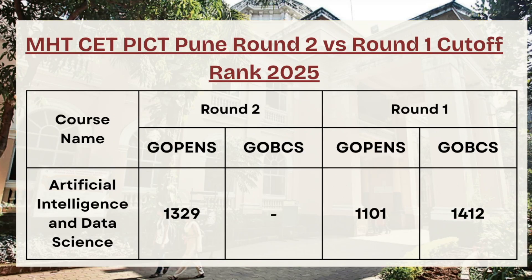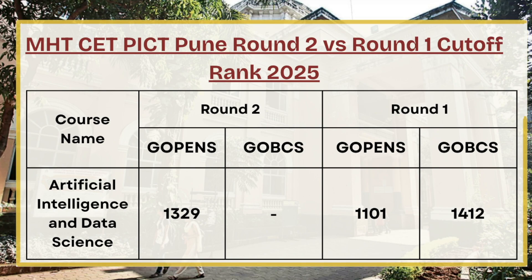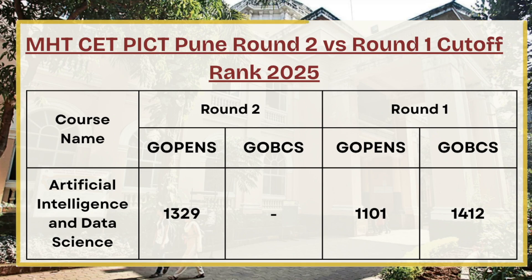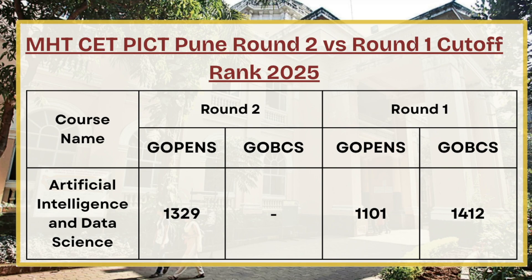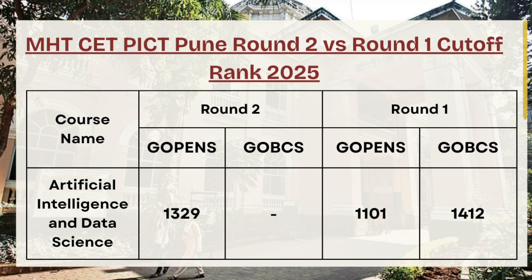Moving ahead, we have Artificial Intelligence and Data Science. For G Open category, the Round 2 cutoff rank is 1329 and Round 1 cutoff rank is 1101, so there is a total difference of 228 points between Round 1 and Round 2. In Round 3, candidates can expect a difference of 200 to 400 rank, meaning the official cutoff rank for Round 3 can range between 1400 to 1600 based on seat availability.